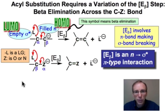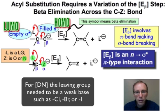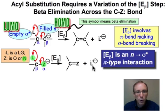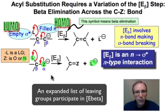Let me point out a couple of features about this generalized beta elimination elementary step. Typically, the heteroatom Z is oxygen, as it would be in the case of a carbonyl, but we'll also encounter cases where that heteroatom is nitrogen. The second thing is the expanded list of leaving groups. When we talked about Dn, that leaving group list was short — the leaving group had to be a relatively weak base. But that is not the case for the beta elimination step. For example, hydroxide could even be a leaving group for beta elimination; it would never be suitable for Dn. So recognize that there's an expanded list of leaving groups that can participate in beta elimination.